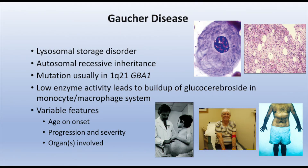Gaucher disease is a lysosomal storage disorder, one of approximately 50 to 60 in that category. Its hereditary pattern is autosomal recessive. The mutation is on chromosome 1q21 and is named GBA1. This gene locus codes for production of an enzyme called glucocerebrosidase, which is either absent or has deficient activity in patients with Gaucher disease, and the degree of deficiency to some extent determines how severe the disease is.